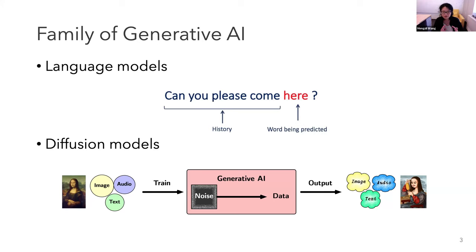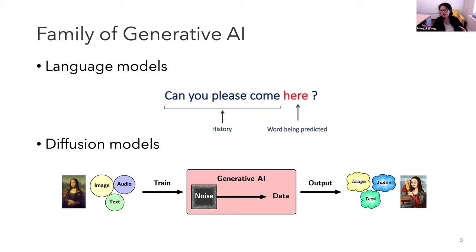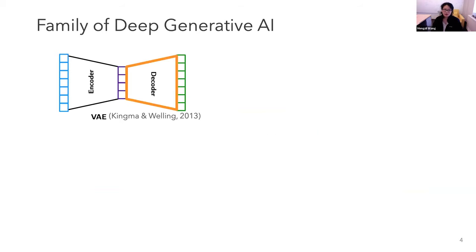Diffusion models work better on continuous variables, while language models work better on discrete variables. Let's think about diffusion models as a sampler, trained on large amounts of data to generate new samples from noise.